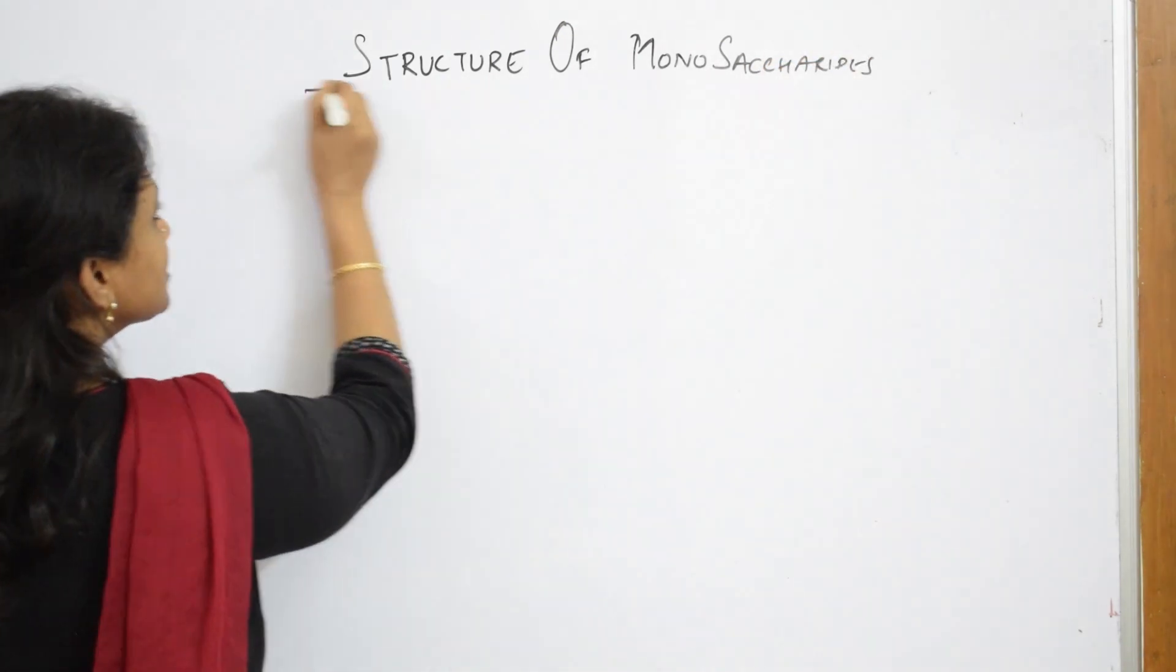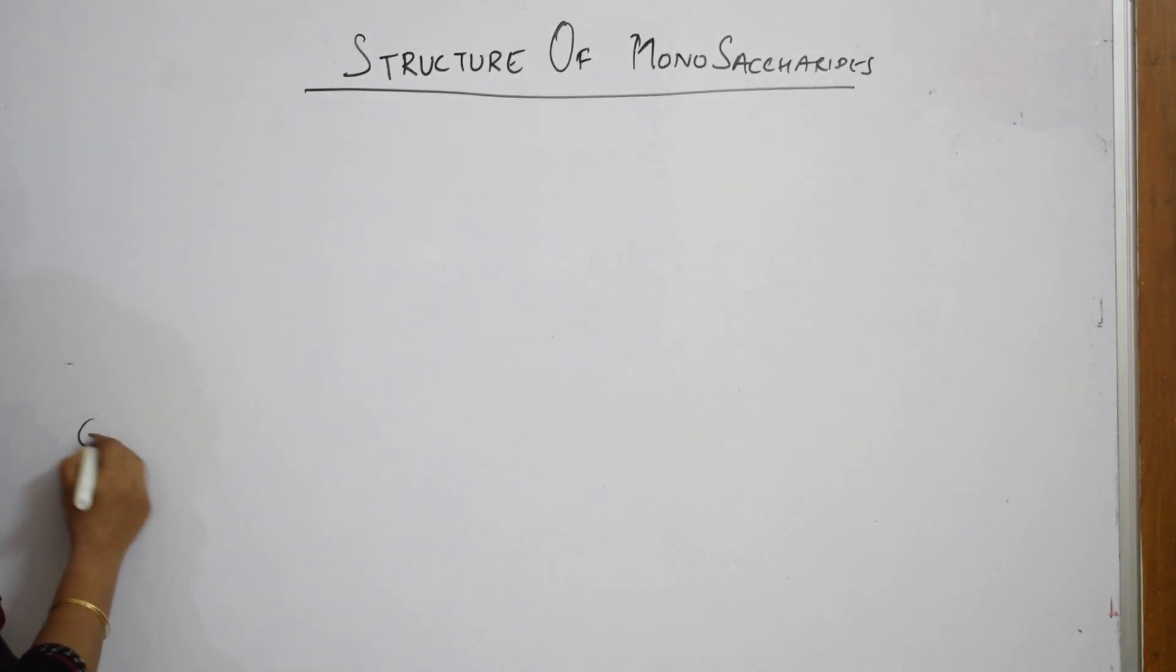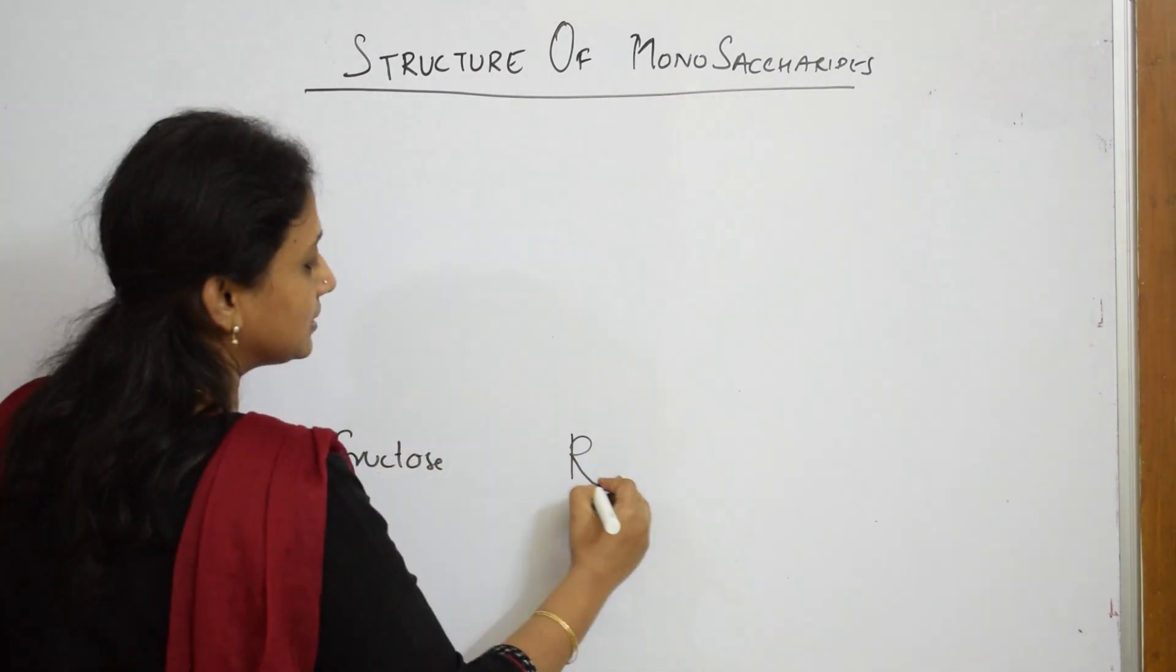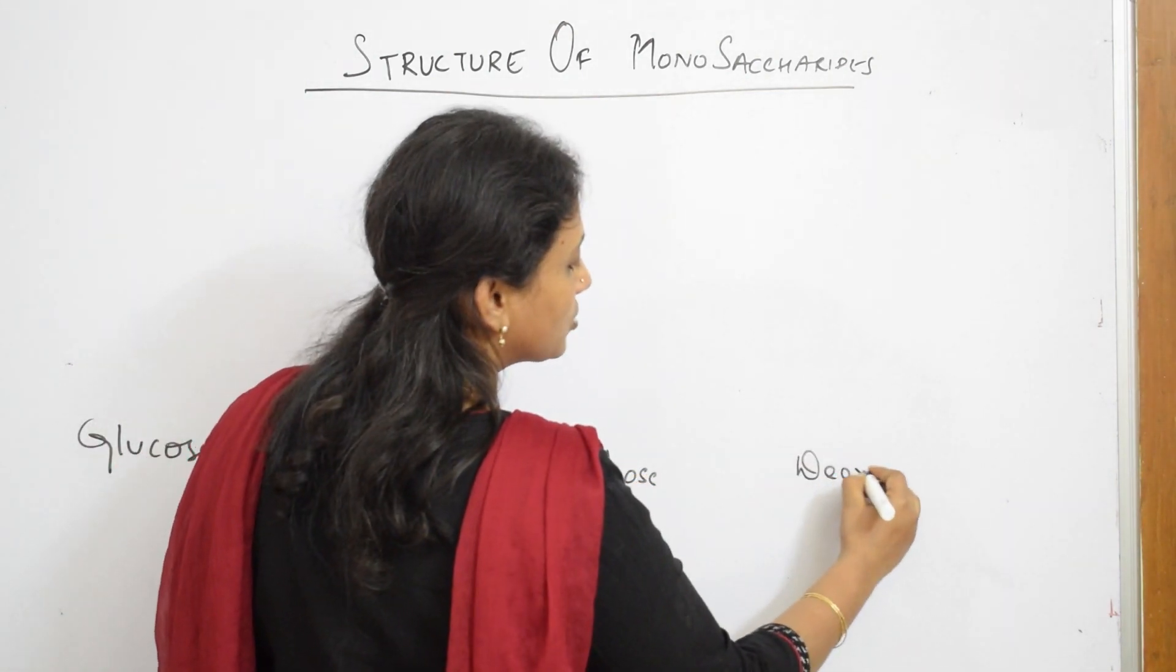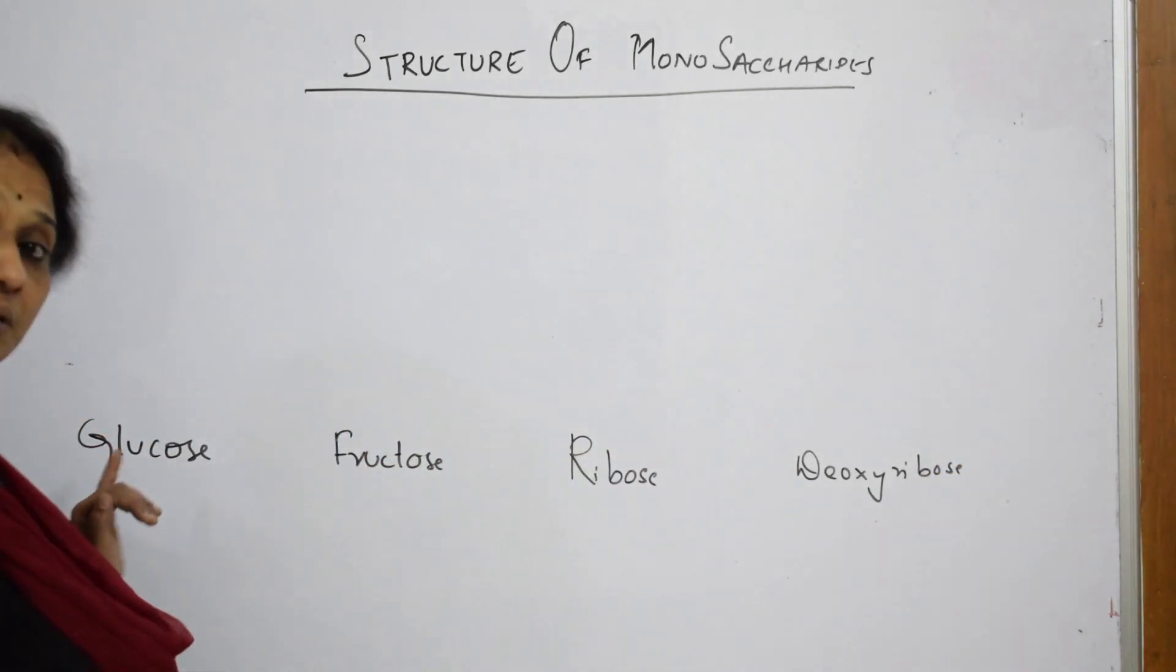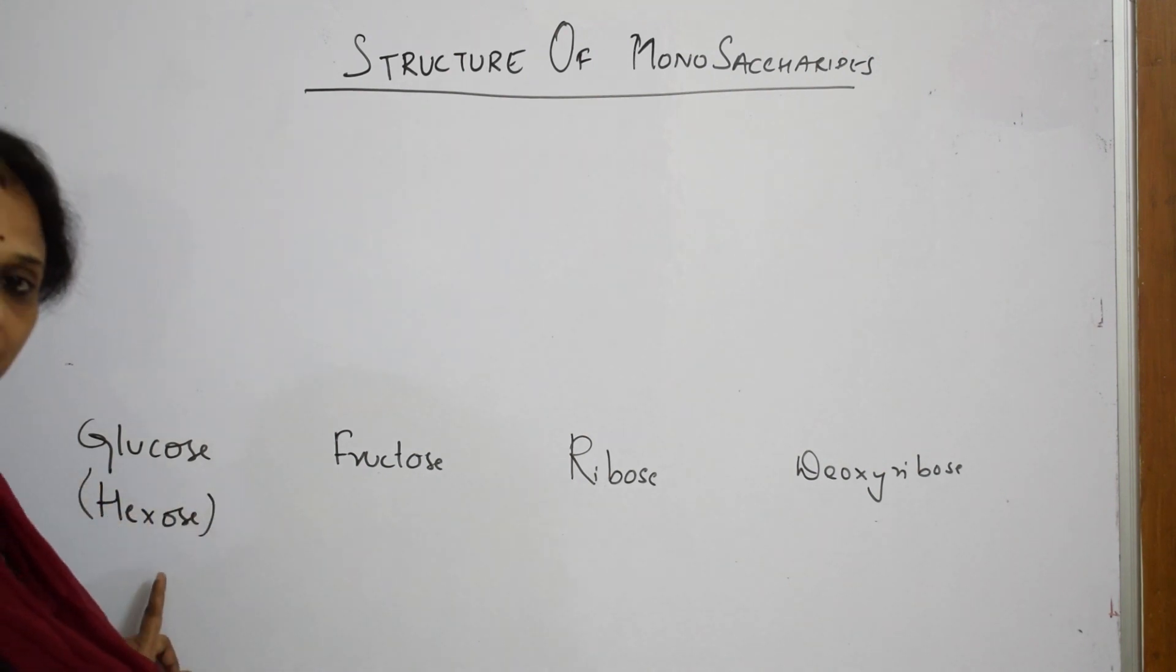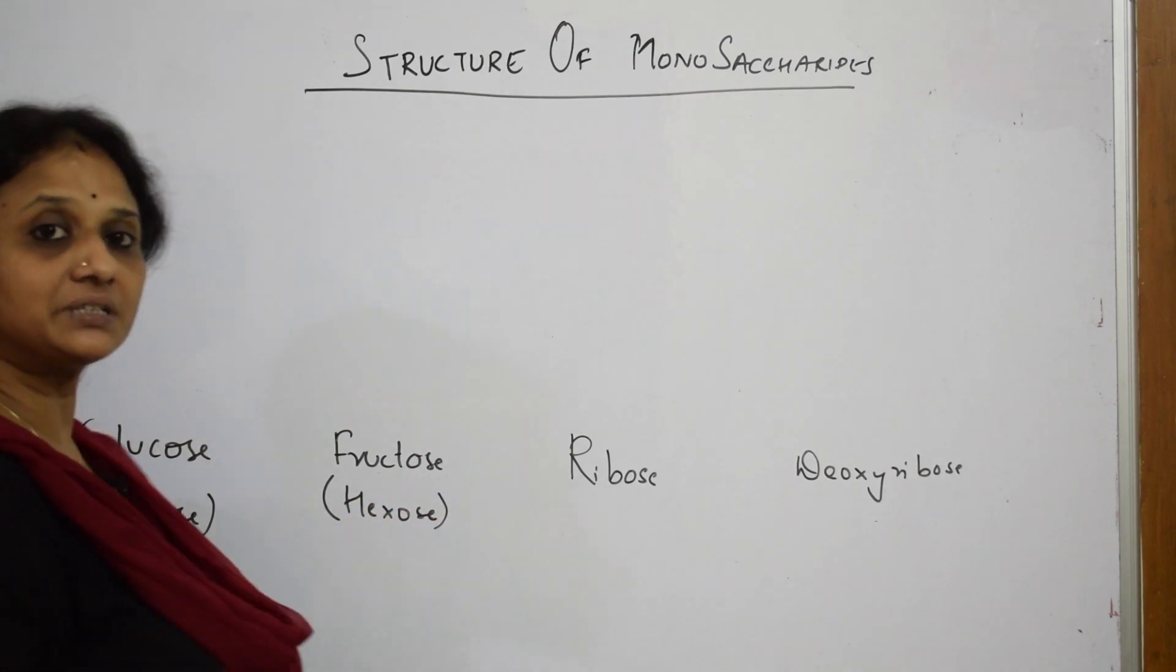When I speak about structures of monosaccharides, the example which I am going to pick up is your first example, glucose. The second example would be fructose. Glucose is a hexose ring. That means there are six carbon atoms. Fructose is also hexose. It also has six carbon atoms.